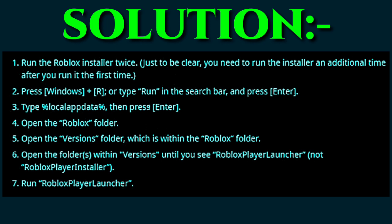The second step is to press Windows + R, or type 'run' in the search bar and press Enter. The third step is to type '%localappdata%' and then press Enter.